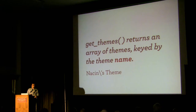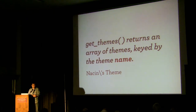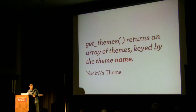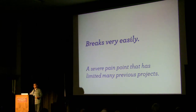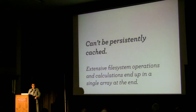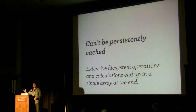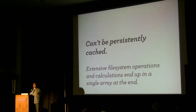GetThemes used the name of the theme as something unique, but there's no guarantee that two themes don't have the same name. There were also escaping issues — you actually couldn't have a theme name with an apostrophe for a long time. This is seven-year-old code. It also can't be persistently cached, which is a big problem. For something like WordPress.com, where millions of users access the same 171 themes over and over again, we clearly don't need to keep calculating this on every single page load.